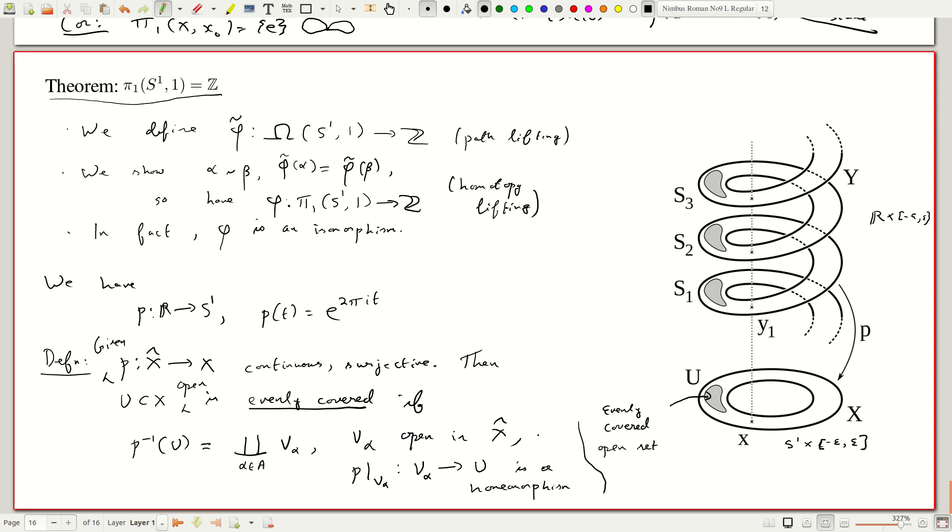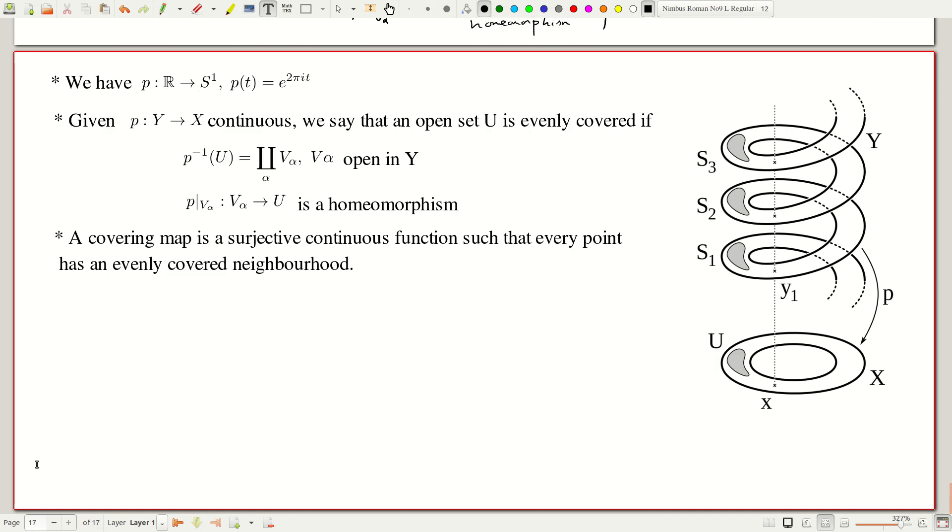OK? So, a neighborhood is evenly covered if there exists, so if the inverse image is a bunch of copies of itself. More formally, it is a bunch of open sets, open upstairs, each of which is mapped homeomorphically onto the given set itself. So, what we have is we have lots of evenly covered neighborhoods. Using that, we will define the concept of a covering space. So, let us see cleanly what is a covering space and then we will look at the main idea of this proof, as I was saying.